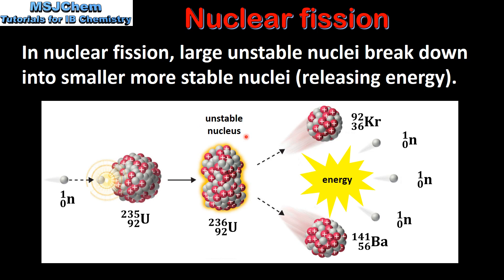The uranium-236 nucleus then breaks down into two smaller more stable nuclei releasing energy in the process. In addition to the two smaller more stable nuclei, three neutrons are also produced. These neutrons then initiate a chain reaction which we'll look at next.